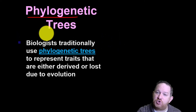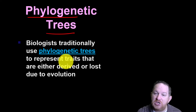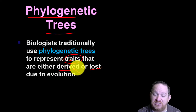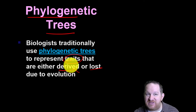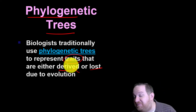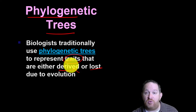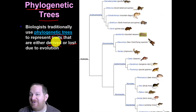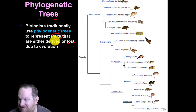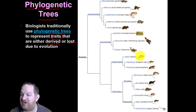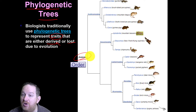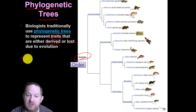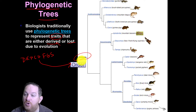A phylogenetic tree is what biologists use to represent traits that are either derived or lost. In other words, traits evolve, or we can simultaneously lose traits. I found this phylogenetic tree of some rodents — you've got some beavers, some mice, porcupines. Rodentia in our classification is actually the order. So O is order — rodents, that's their order. And then you can see we break it down even further.